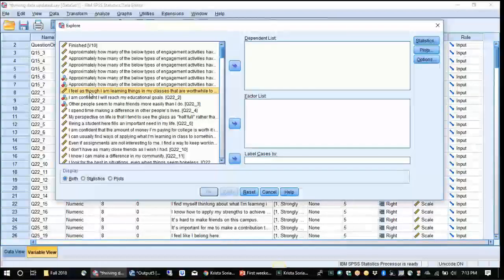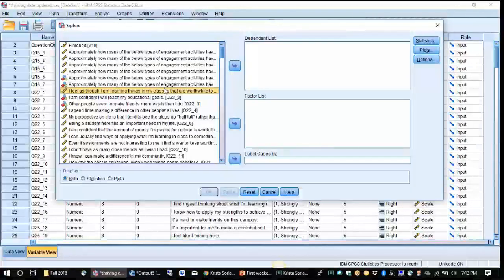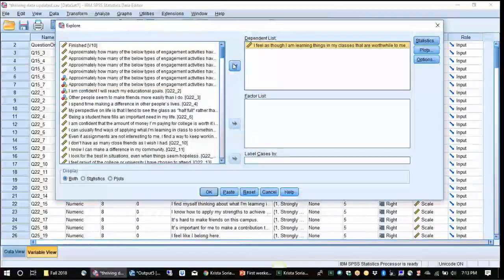So in order to understand the data a little bit more, I'm going to click on Analyze, and then Descriptive Statistics, and then Explore. And there's two ways of pulling over our data. I feel as though I'm learning things in my classes that are worthwhile to me as a person. One is that you can just grab it and drop it. The other one is that you can highlight it and move it over.